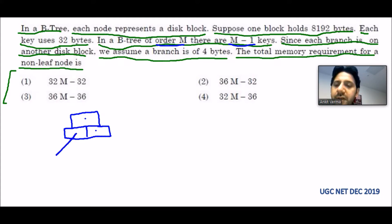That is further linked with other nodes which contain children. Similarly, this also contains a node having children. The children are always 1 plus the keys. They are saying that in a B-tree, each node is represented by a disk block. That means this complete node is a disk block.